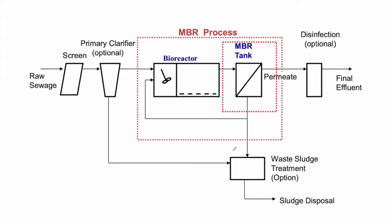Let's go deeper into the MBR process. We always start by screening — fine screening. Then we can use a primary clarifier, though this is optional. As long as your screening is well designed, functioning well, and well maintained, there is no need for a primary clarifier. This depends on the amount of total suspended solids entering the wastewater treatment plant. Then we have the MBR process, which has many stages, including the anoxic stage that is anaerobic — here we use a mixer.